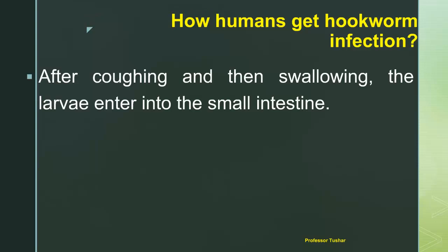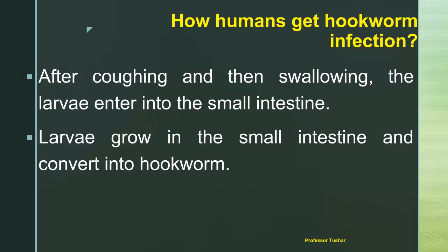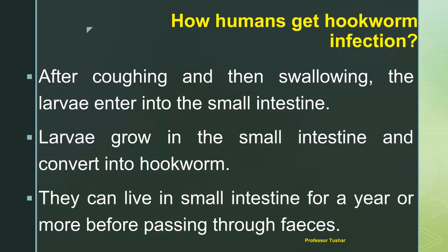The larvae enter the skin and reach the lungs by traveling through the blood. After coughing and then swallowing, the larvae enter into the small intestine. Larvae grow in the small intestine and convert into hookworms. They can live in the small intestine for a year or more before passing through feces.